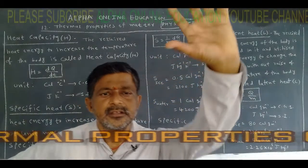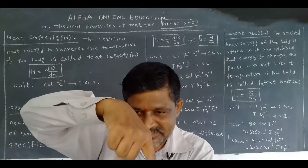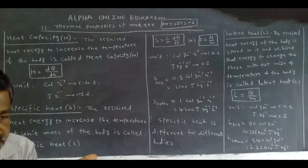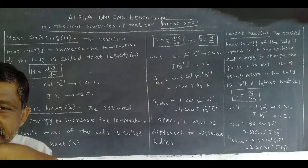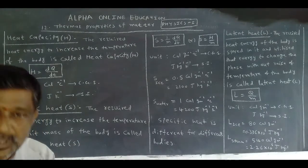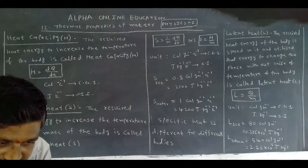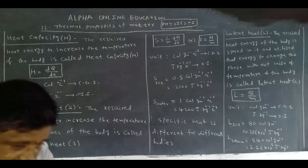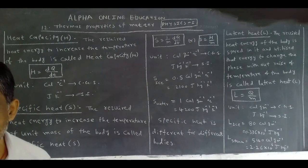For example, take ice and place it on a candle or burner. If you touch it, the temperature of the ice does not increase, but it starts to melt and converts into liquid. Until all the ice converts into water, its temperature does not increase. It receives heat energy but the temperature is not increased — it converts into water. The energy stored during this process is called latent heat.